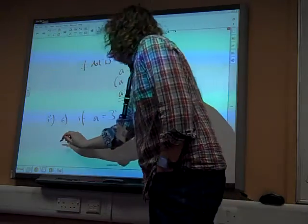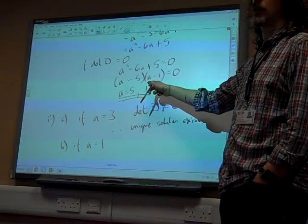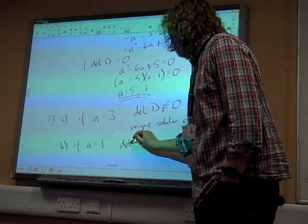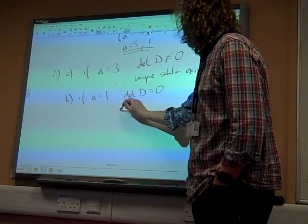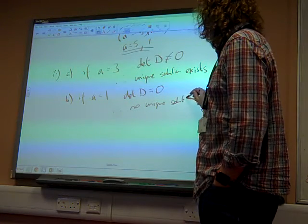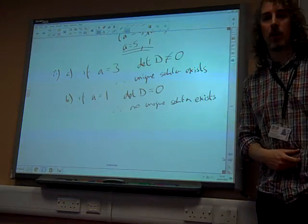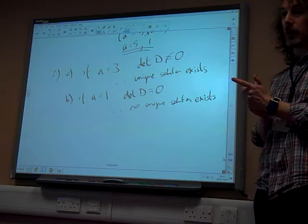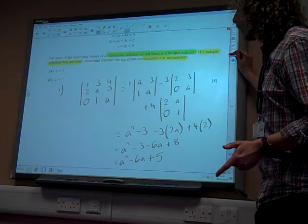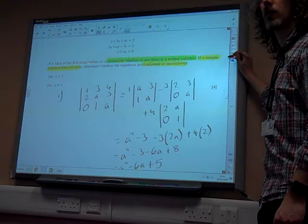Part B, A equals 1. If A equals 1, aha! That was one of the values on here that made it singular. The determinant of D equals 0. Therefore, no unique solution exists. OK? That's the first bit that we've done. Now, we now need to do a little bit further digging now, because the question did say, if no unique solution exists, determine whether the equations are consistent or inconsistent. So we need to look at these equations now.